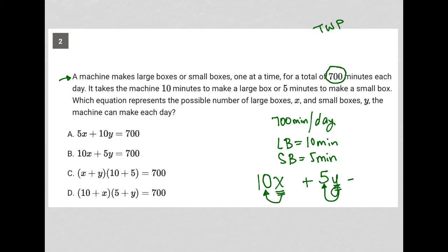And all together, we know that we have 700 minutes each day to make these boxes. So this is the equation we should have: 10X plus 5Y is equal to 700.